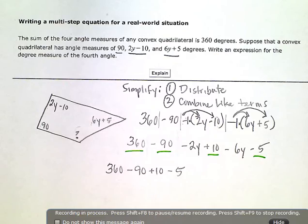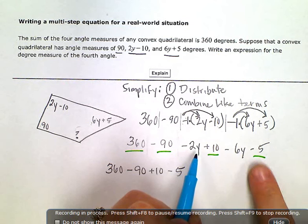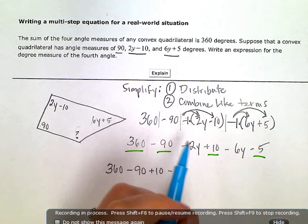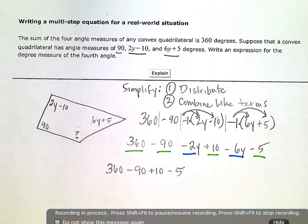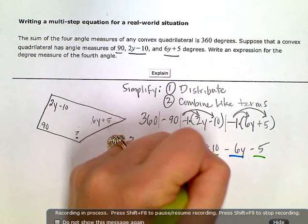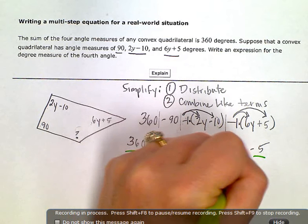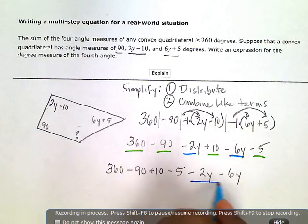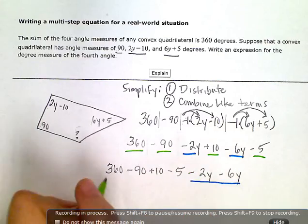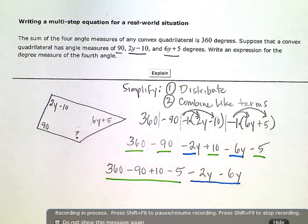Then these two both have y. So I'm going to combine those two together, my blue ones. So I'll put these two next to each other on the end. So these were my two y terms. Those two were like terms. These are my constant terms. Those are all like terms. And now I just need to combine them.